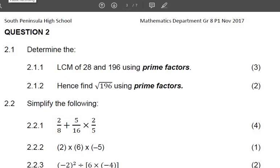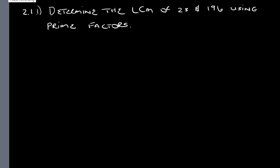Today we are going to be discussing question 2 of the November 2017 grade 8 paper. 2.1.1 says determine the LCM of 28 and 196 using prime factorization. What's the easiest method to use?